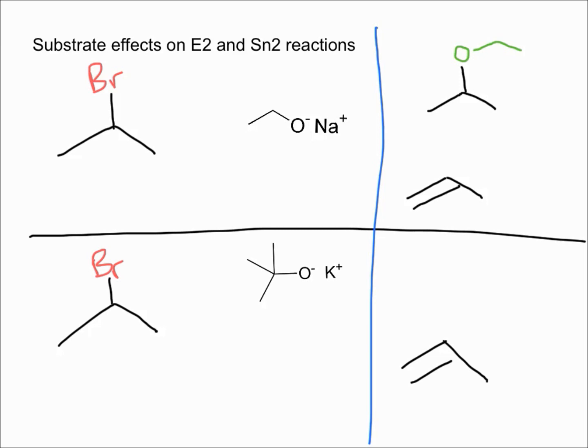But because the electrophilic carbon is more hindered, the elimination products are observed in higher yields. So you just get more elimination product, which would be this one right there.